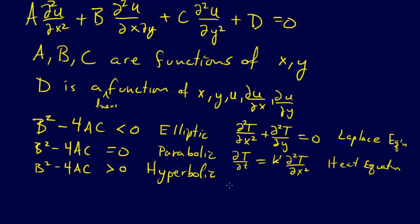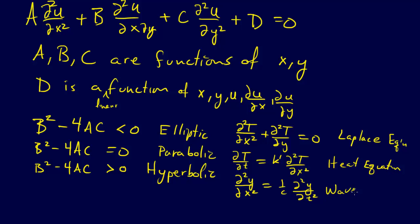The final example, for the hyperbolic type, is the second partial of Y with respect to X equals 1 over C times the second partial of Y with respect to T. This is the wave equation.